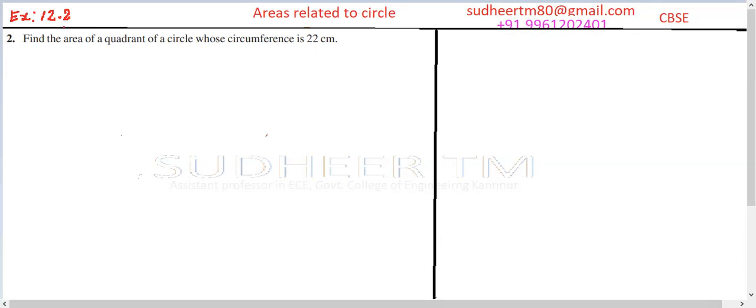Question 2, Exercise 12.2: Find the area of a quadrant of a circle whose circumference is 22 centimeters. We have a circle here whose circumference is given. The circumference formula 2πr is equal to 22, so πr is equal to 11.